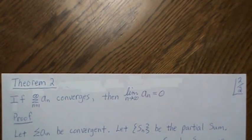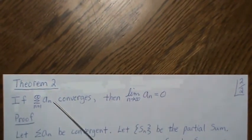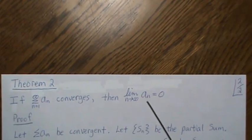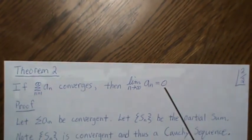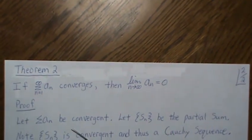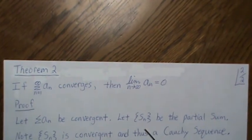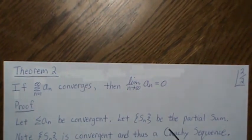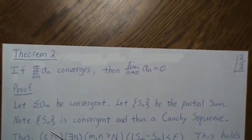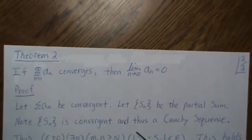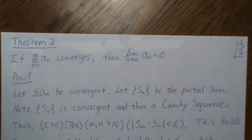So another property, if this series converges, then the limit of our ANs goes to zero. So let's let AN be convergent, and then let SN, the sequence, be the partial sum. Note that the sequence SN is convergent, and thus a Cauchy sequence.